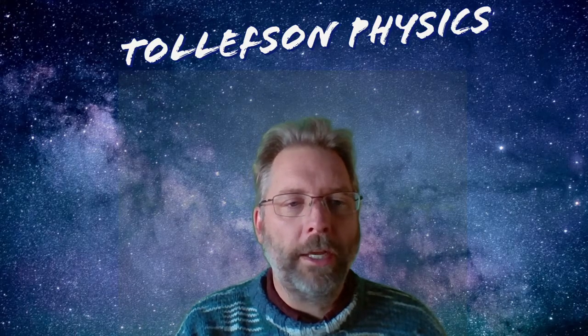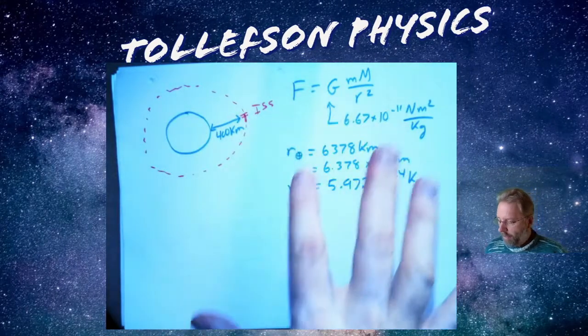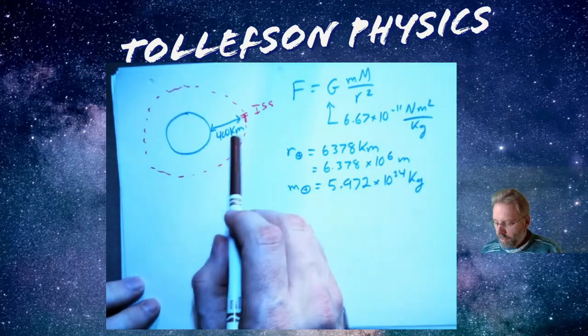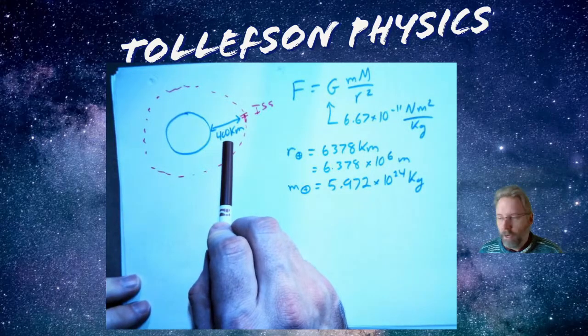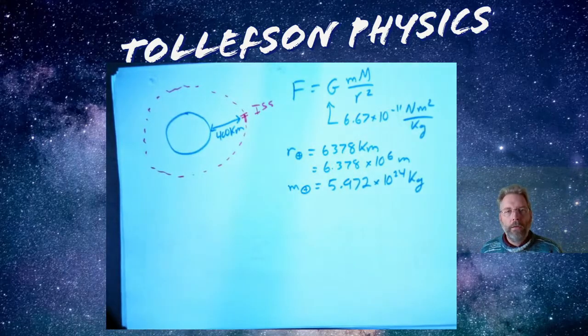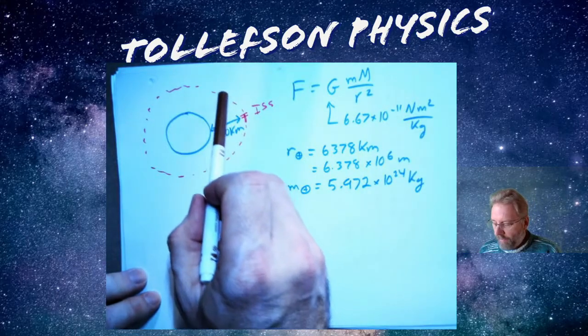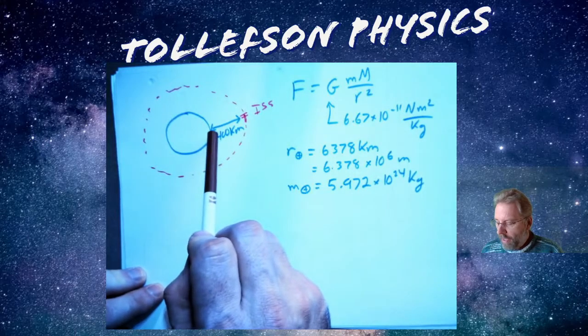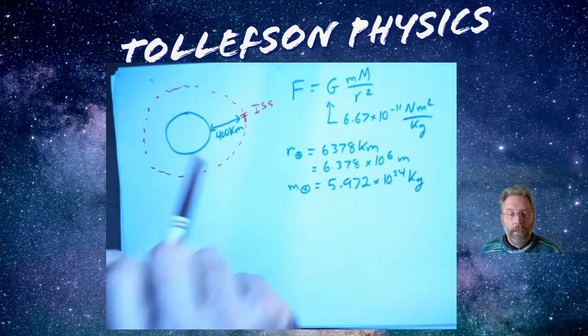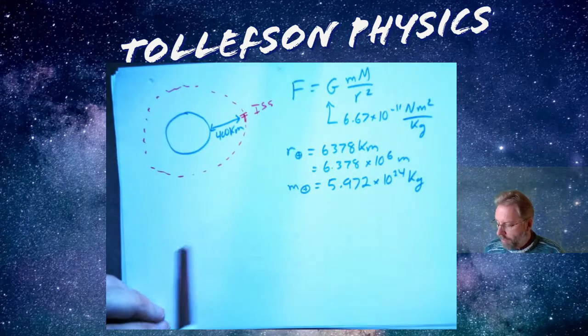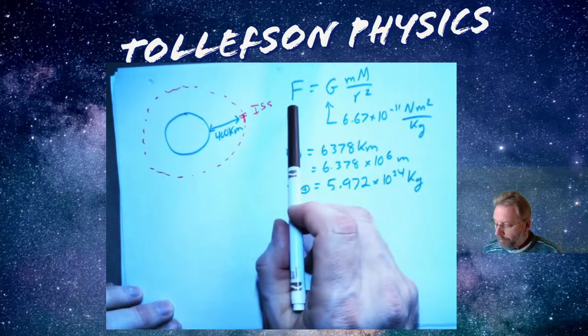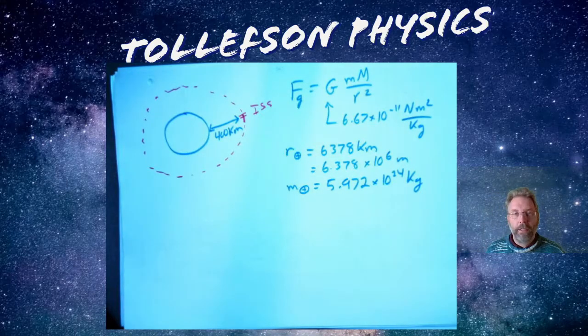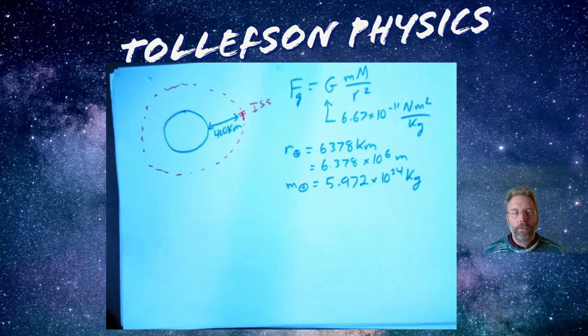What we're going to look at first is the International Space Station. I wrote down some of the stats that we're going to need. The International Space Station is in an orbit that's about 400 kilometers above the surface of the earth. We're going to use that information to predict two things. We can predict how fast this is going around the earth, and we can predict how long it takes to go around the earth. Here's the radius and the mass of the earth if we need it. And a reminder of how we can calculate force due to gravity using universal law of gravitation.